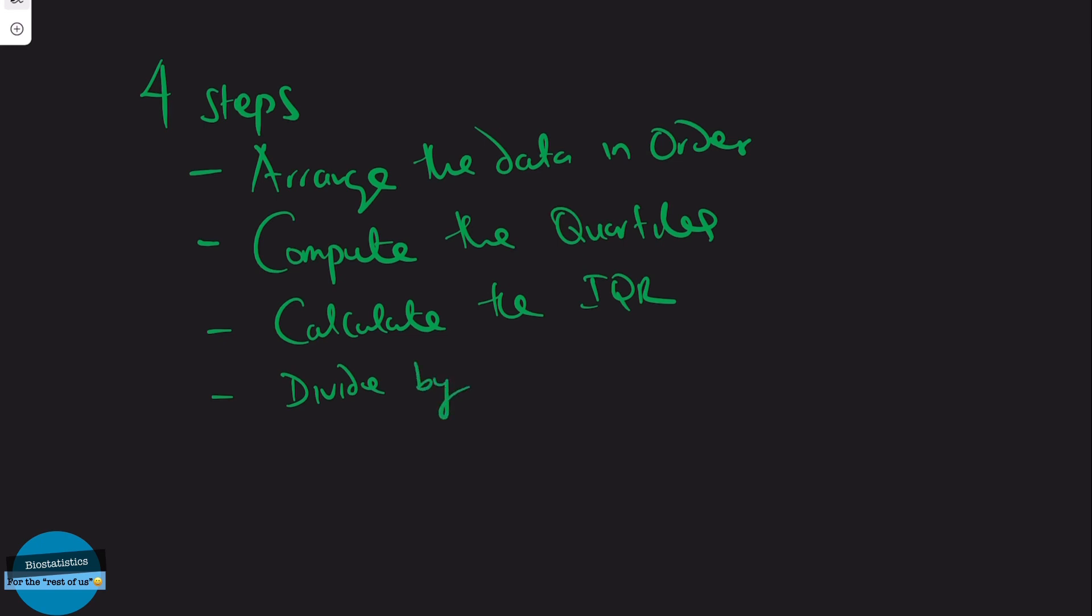First off, arrange the data in order. Then, we compute the quartiles. And we calculate the interquartile range. And lastly, we divide it by 2 to get the semi-interquartile range or the quartile deviation.